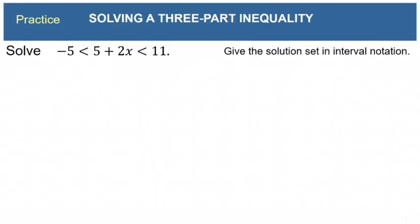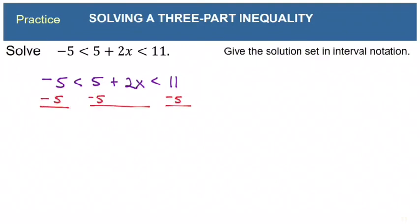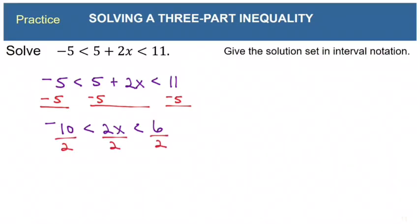Here is a practice one — pause the video and give it a try. To isolate x in the middle, first subtract 5 from each piece to eliminate the constant. That gives negative 10 is less than 2x, which is less than 6. Now divide each piece by 2: that gives negative 5 is less than x, which is less than 3.